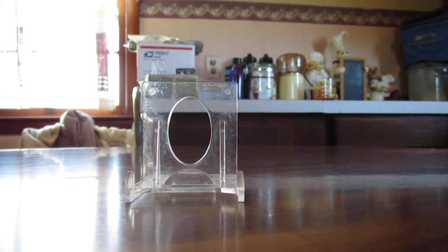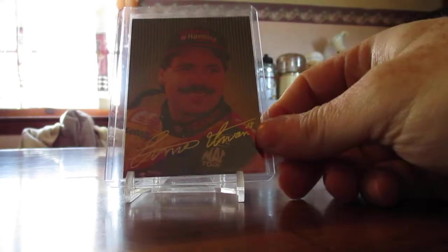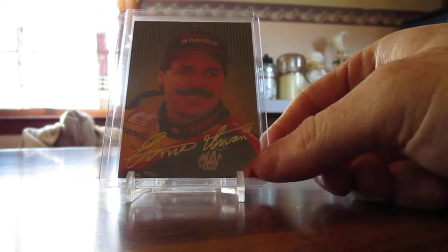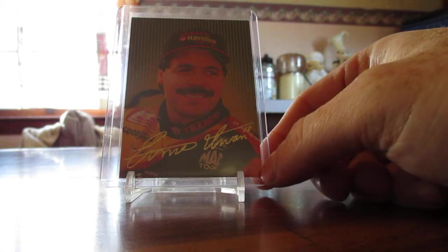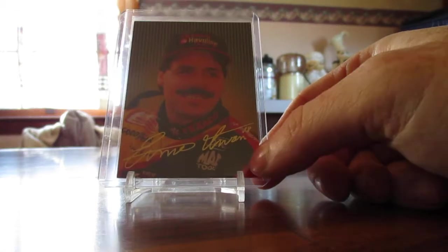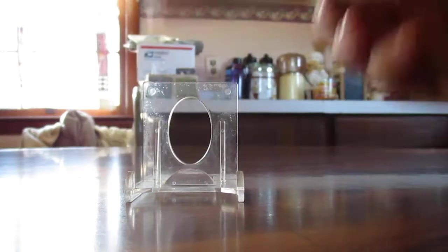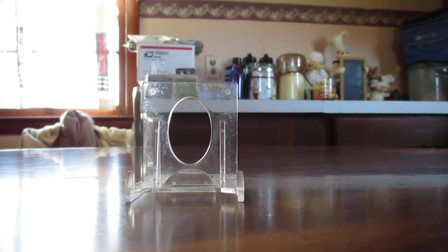And then these next five cards is an insert set that was in with this lot. Really, really sweet looking insert set in my book. And we'll start off with Ernie Irvan. They're gold signature cards. They're not actual autographs, just facsimiles. But still a nice looking insert set from way back in the day, 1994.